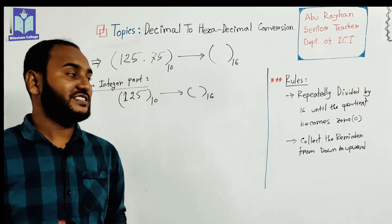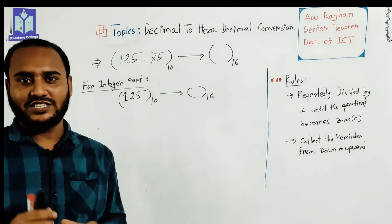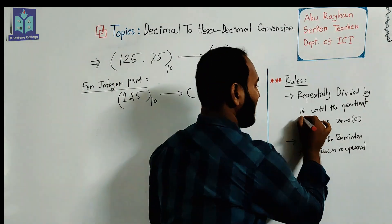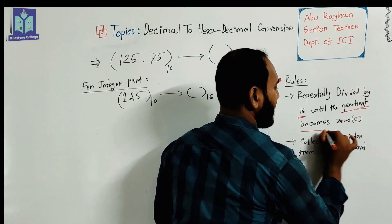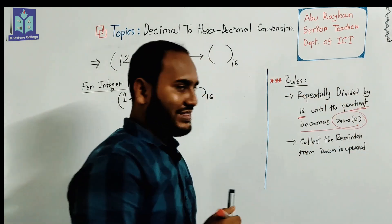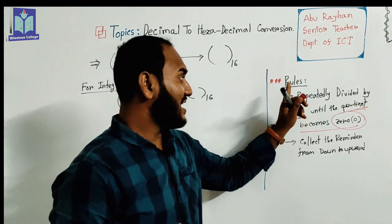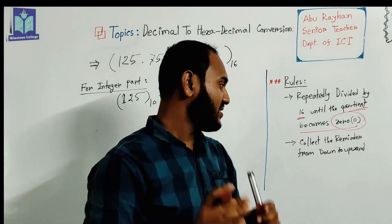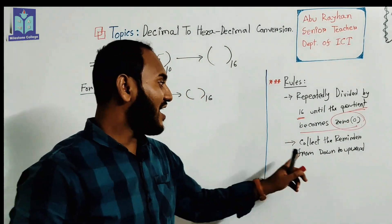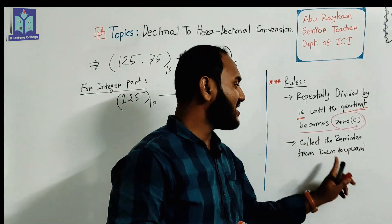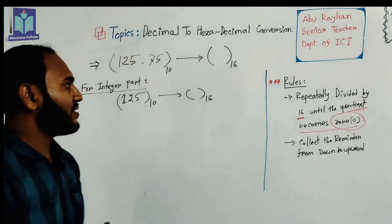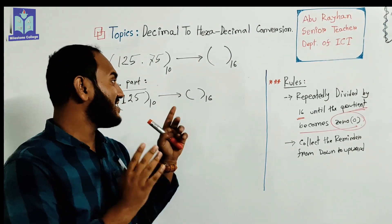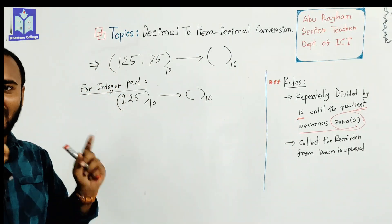To convert a decimal integer value to hexadecimal, there are some rules. The rules are: repeatedly divide by base 16 until the quotient becomes zero — that is very important. Collect the remainder from downward to upward. So according to the rules, we have to divide this value by base 16.